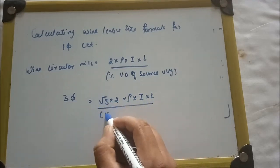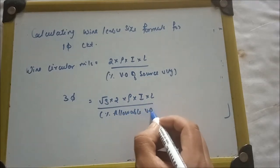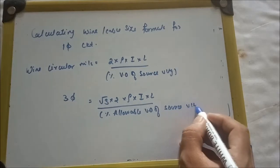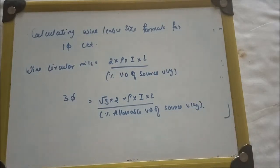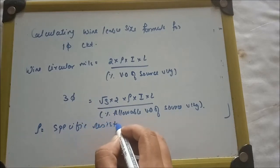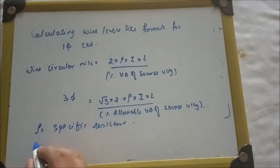Now, what is ρ? It is nothing but the specific resistance or resistivity of the conductor. D is equal to distance in feet.